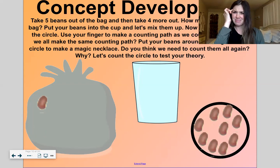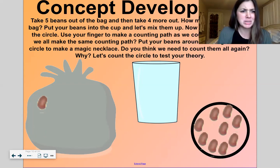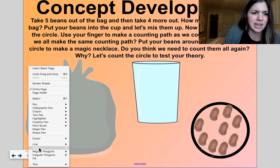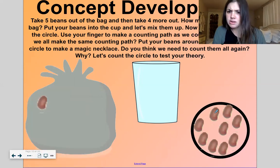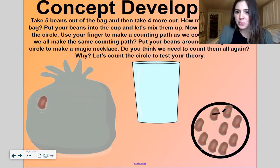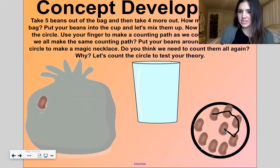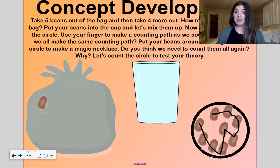Okay, so we have five and four. How many total do we have? Let's make a counting path. Let's make a counting path. And I'm gonna use my pen to show you. So let's start here and stop here. Ready? One, two, three, four, five, six, seven, eight, nine.